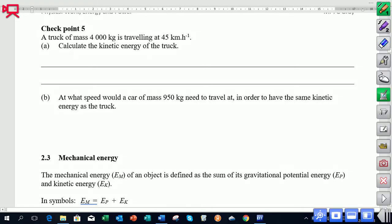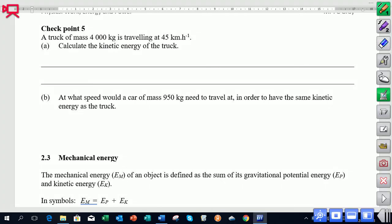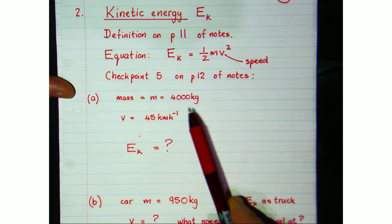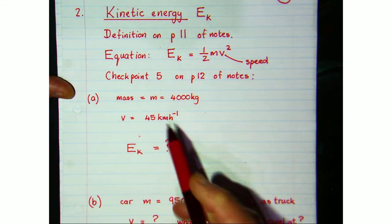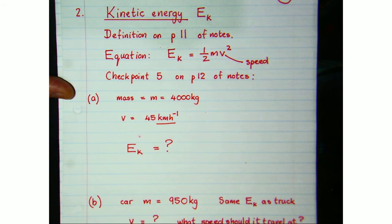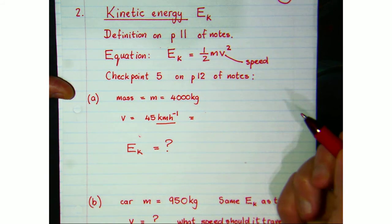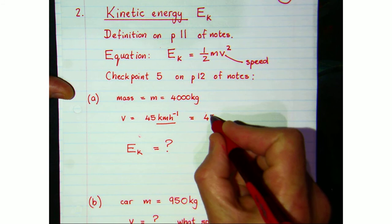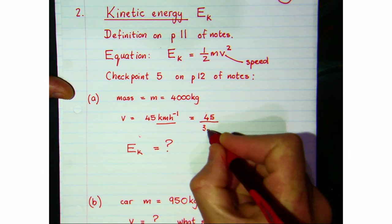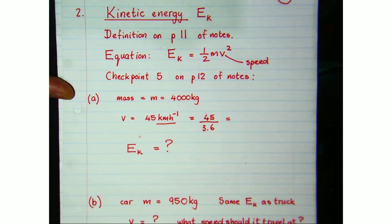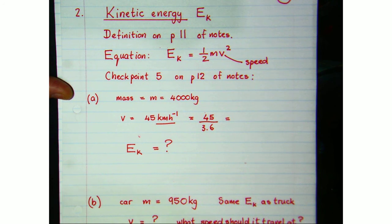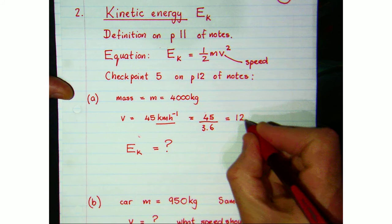We're looking at a truck of mass 4,000 kilograms traveling at 45 kilometers per hour, and we want to find the kinetic energy of that truck. We recognize that kilometers per hour is the wrong unit to substitute into our equation, so we need to convert to meters per second. From Grade 10, to convert km/h to m/s we divide by 3.6, giving us 12.5 meters per second.